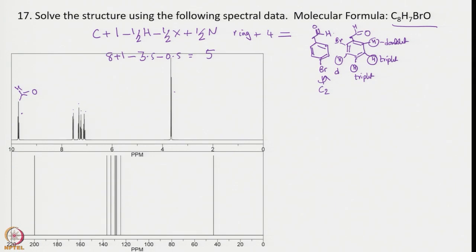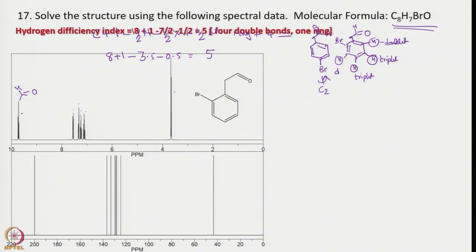In the ortho-bromo compound, counting carbons 1 through 8: all are non-equivalent, giving 8 signals. Without hesitation, one can assign this spectrum and write the structure as ortho-bromobenzaldehyde. The hydrogen deficiency index is 5, confirming the benzene ring plus the aldehyde carbonyl. Now we can identify the individual signals — for example, the aldehyde carbon and aromatic carbons.